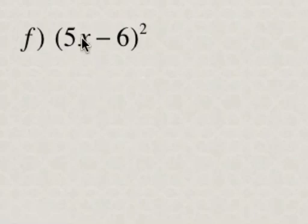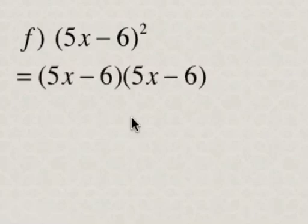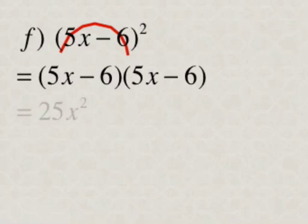Now here we have a binomial squared, so we can write that as 5x minus 6 times 5x minus 6. And we're going to multiply the first terms, so 5x times 5x is 25x squared.